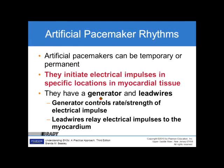Artificial pacemakers can be temporary or permanent. They initiate electrical impulses in specific locations of myocardial tissue. They have a generator and lead wires. The generator controls the rate and strength of the electrical impulse, and the lead wires relay electrical impulses to the myocardium. So the generator is the power supply, and the lead wires are laid on specific sections of myocardium so that the pacemaker can send electrical stimulus to the heart.